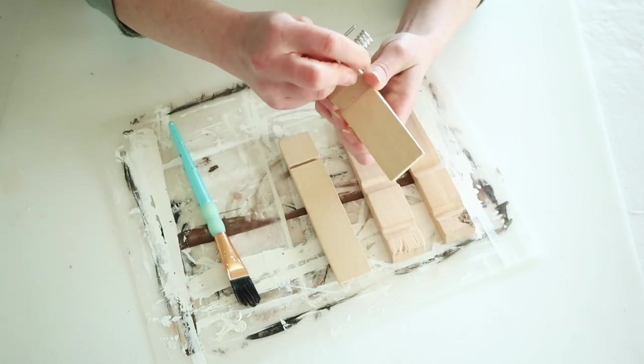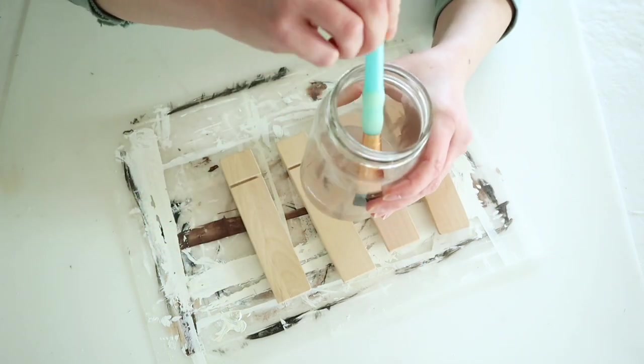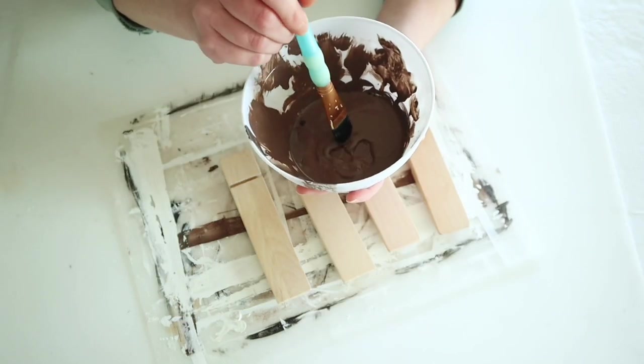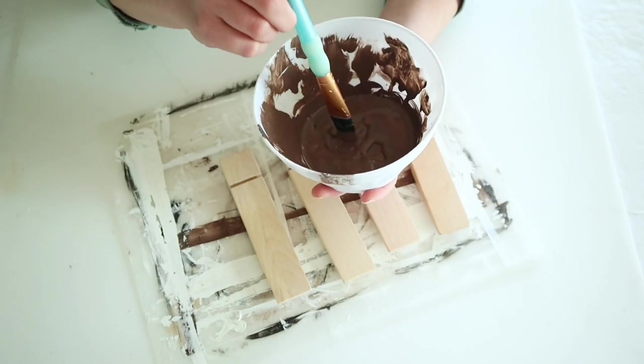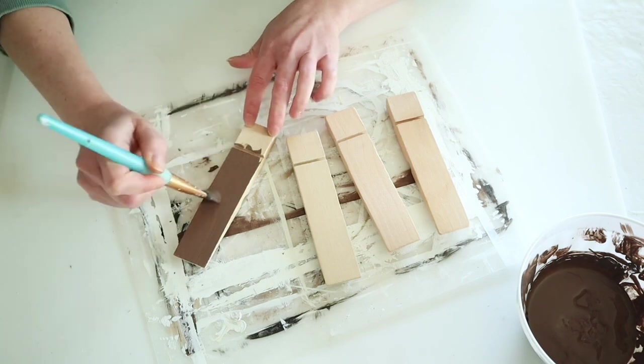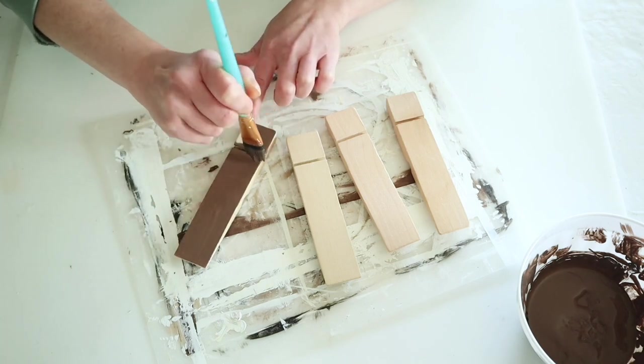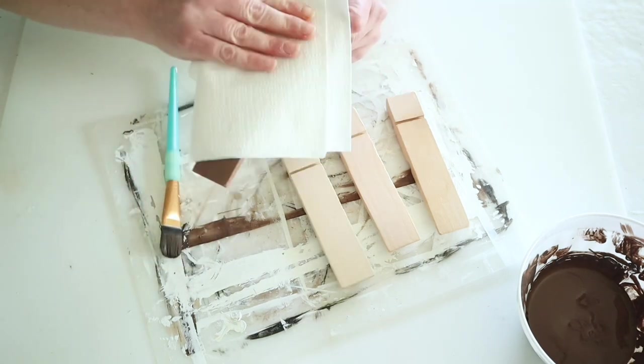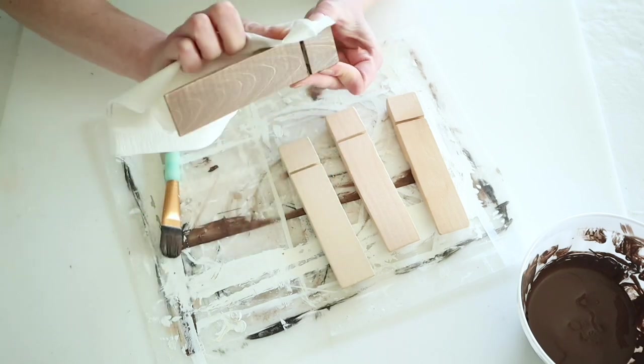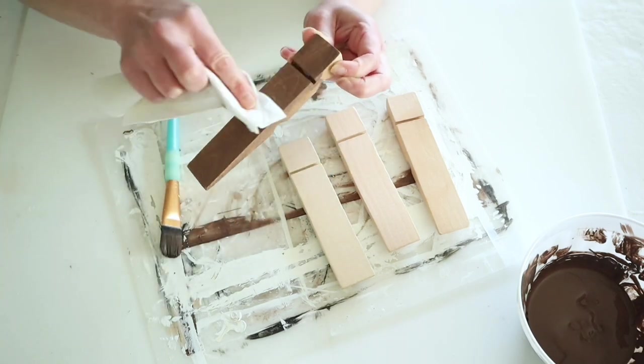I'm going to wet my paintbrush and use some of this brown paint that I have mixed up to stain all of these. I'll paint that onto here and then use a paper towel to wipe off any excess.